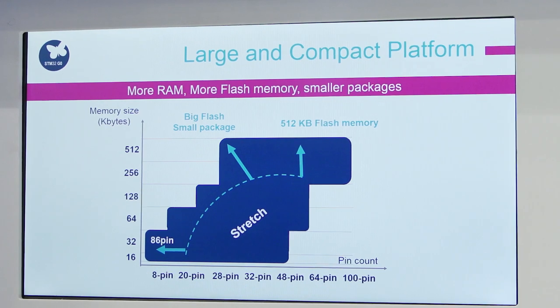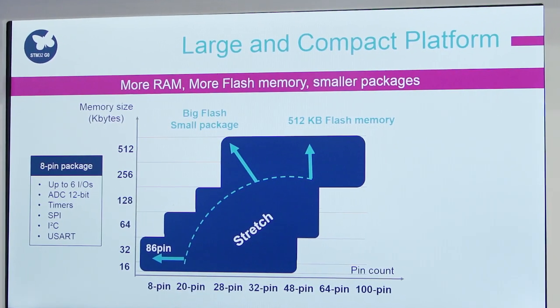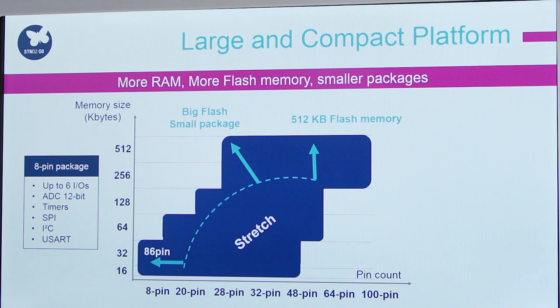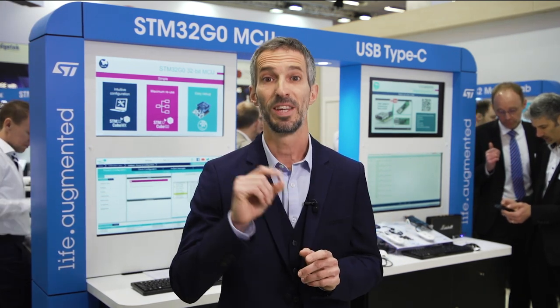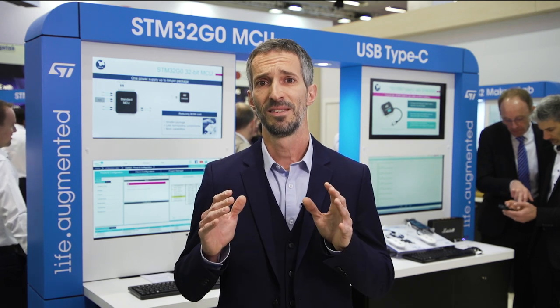Where it gets interesting is we have combined features like a big memory with a small package, like 512K flash in a 32-pin, as an example. It comes with more RAM, more IOs per package and a very accurate internal clock over the whole temperature range. It is also very robust. So whatever memory or IO requirements you have, you can select the smallest possible package and remove most external components such as capacitors, clocks or filtering components. The BOM cost savings are a real advantage.